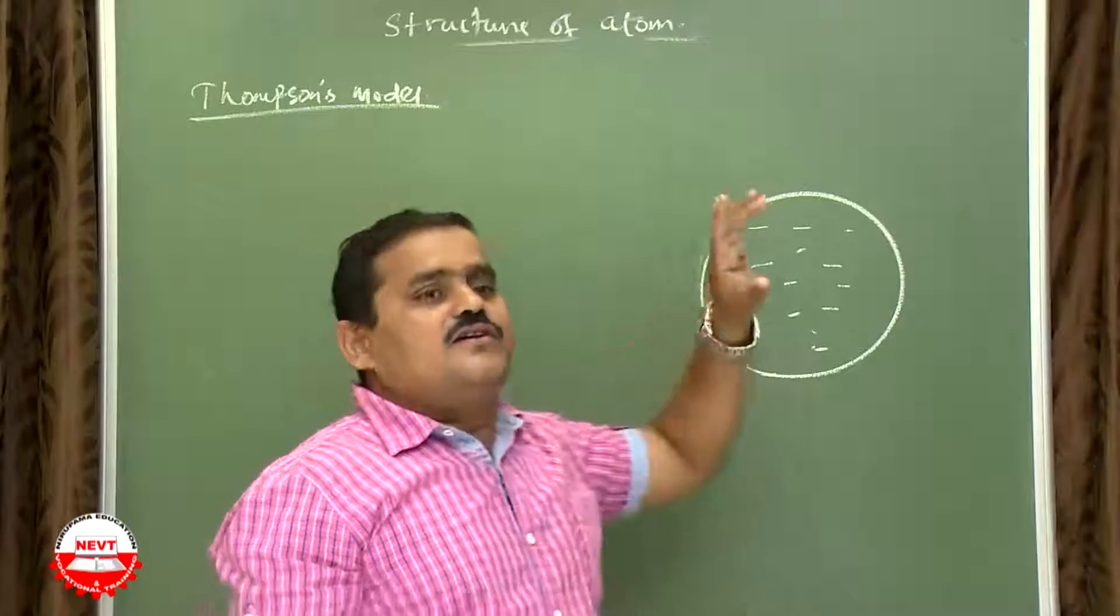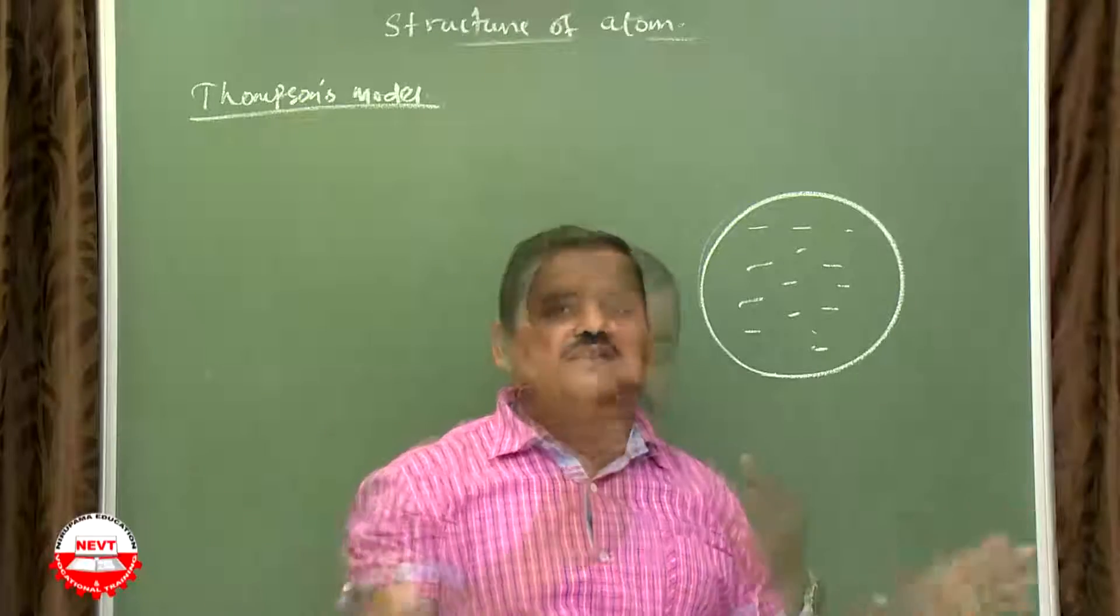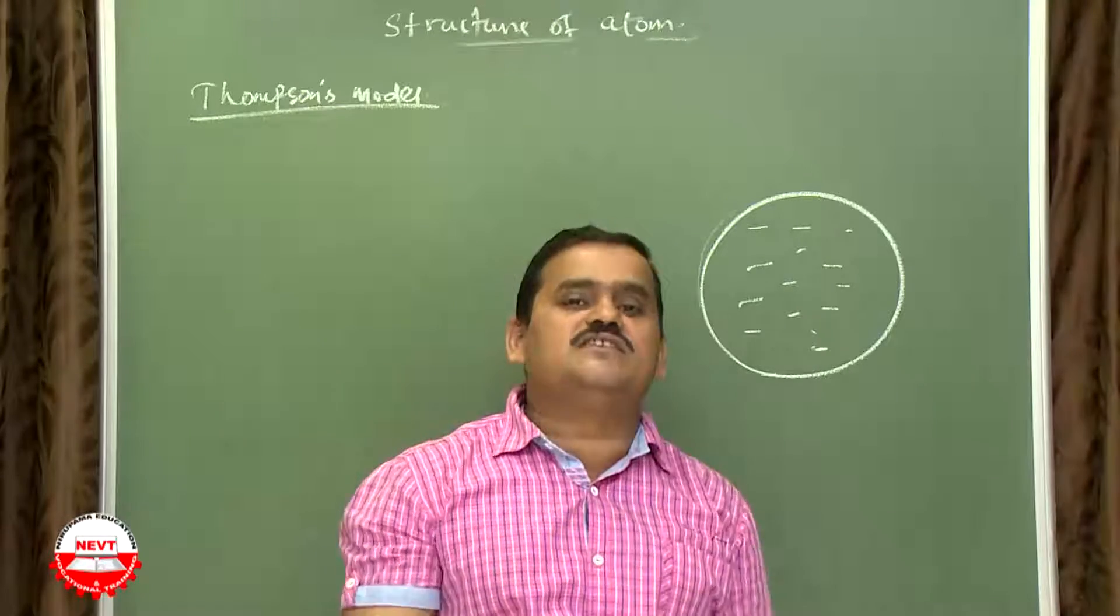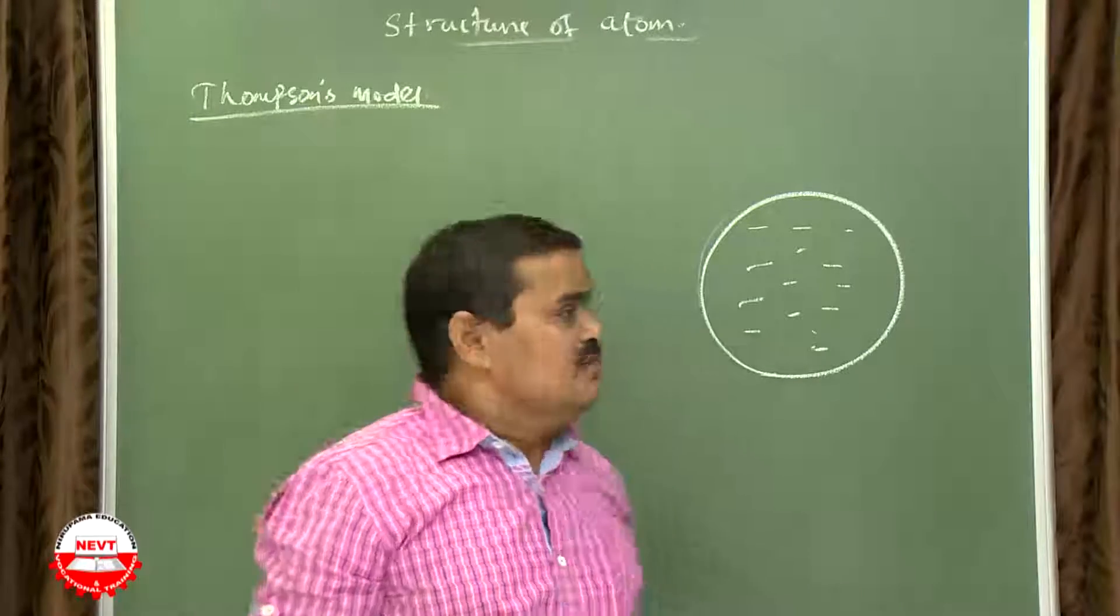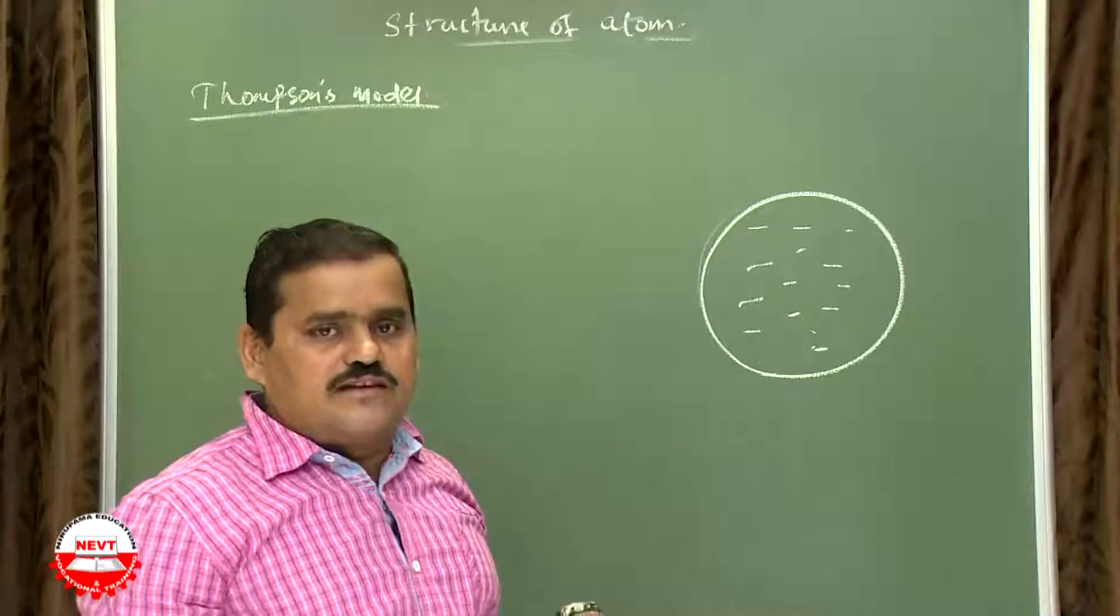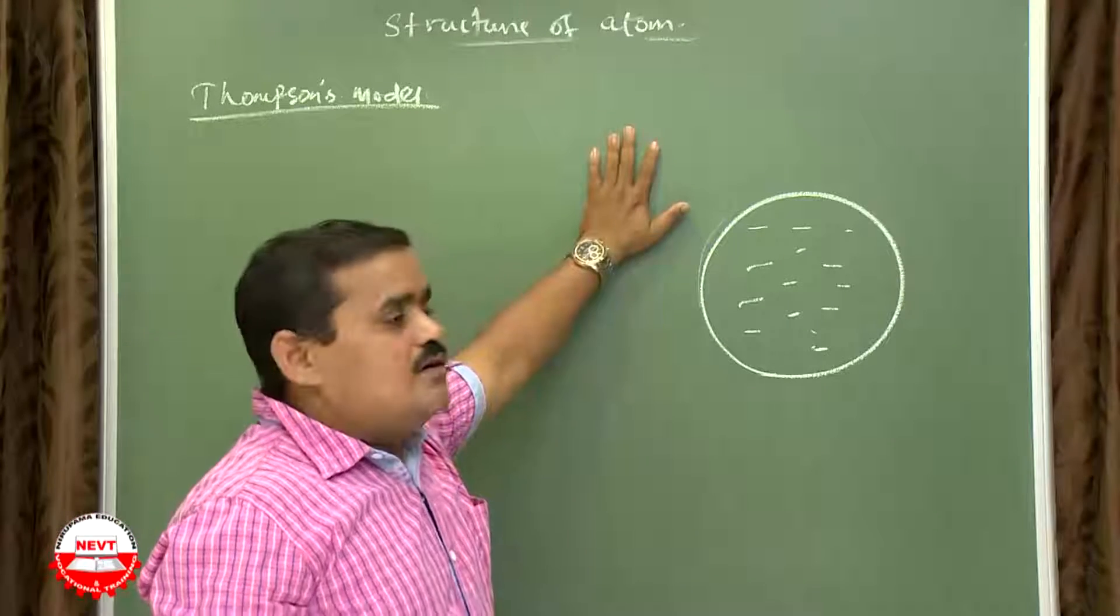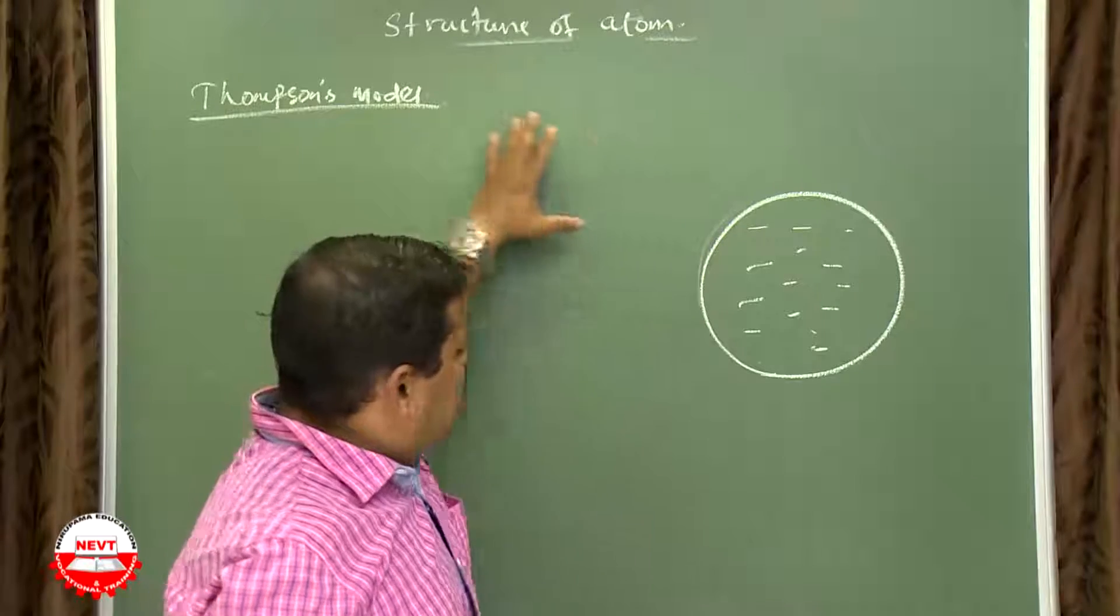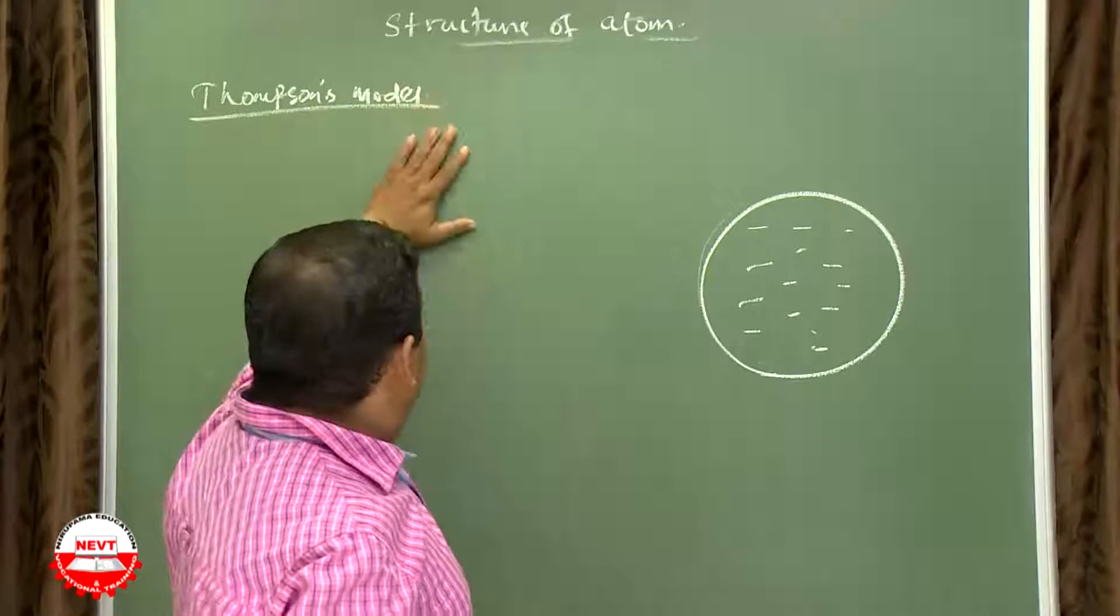Second point: magnitude of electron and proton both are equal, therefore the charge of an atom is electrically neutral. So these are the two points you have to write it. Then drawback of this model. Actually a two mark question will come. You have to write the two points, next you have to write the drawback.